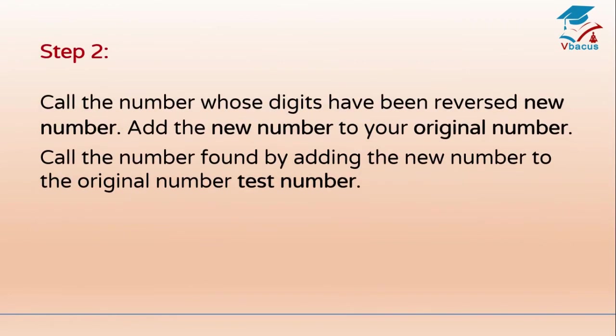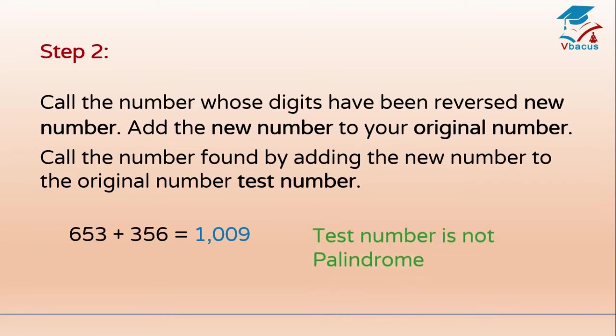Step 2: Call the number whose digits have been reversed the new number. Add the new number to your original number. Call the result the test number. 653 plus 356 is equal to 1009. The test number 1009 is not a palindrome.